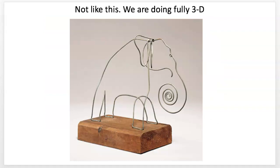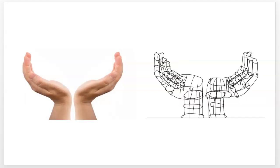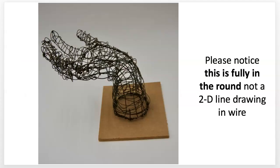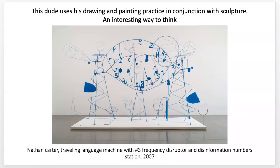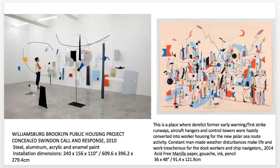We have the hands: I showed you the photograph, the drawing, and then the executed sculpture that's finished in the round. Nathan Carter is an interesting artist who uses drawings and paintings to practice, doing a lot of those in conjunction with sculpture. These are not as 3D as I would like you to have your stuff, but it's really interesting as a way of thinking. If you're really into painting and drawing — which a lot of you are as art majors — this project can actually relate really well for you to think about how your ideas can translate into 3D space.